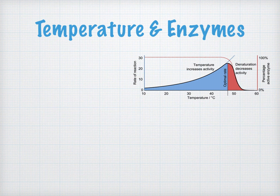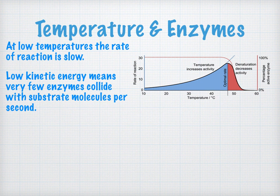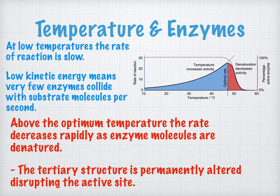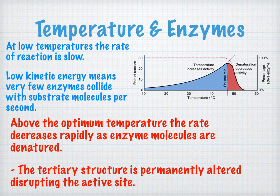One factor which affects the rate of enzyme-controlled reactions is temperature. When the temperature is very low, particles don't have much kinetic energy and are moving slowly, resulting in a lower rate of reaction, as enzyme molecules need to collide with substrate molecules for the reaction to happen. At the optimum temperature, the reaction is at its fastest possible rate — there's enough kinetic energy for substrate to hit the enzyme, but not too much.